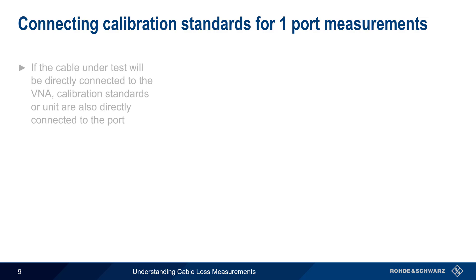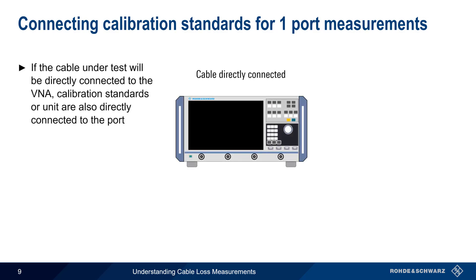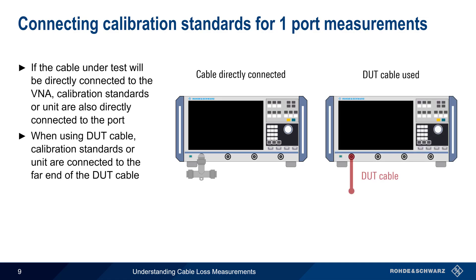If the cable under test will be directly connected to the VNA port, the calibration standards or unit are also connected directly to the port during the calibration process. If a DUT cable is used, then the calibration standard should be connected to the far end of the DUT cable. Doing this allows the DUT cable to be removed from, or calibrated out of, the measurement results.